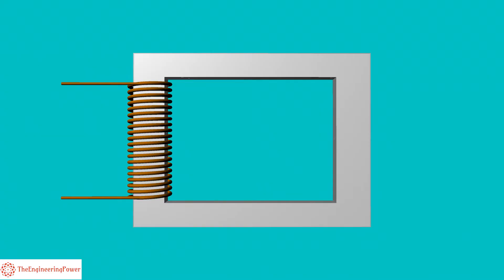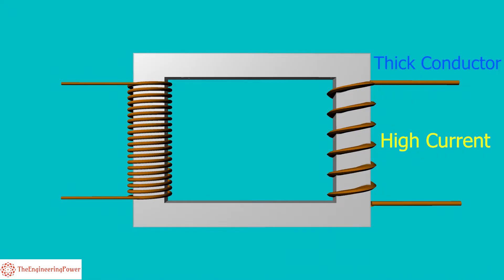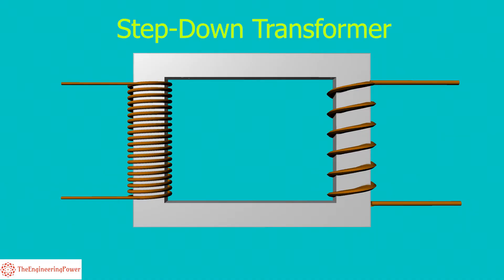Similarly secondary winding is also wrapped around the core. As there will be higher currents on the secondary side of PT because of low voltages, therefore thicker conductor is used in LV winding of PT. As the PT is a step-down transformer, so the number of turns in secondary winding are very less as compared to primary winding.